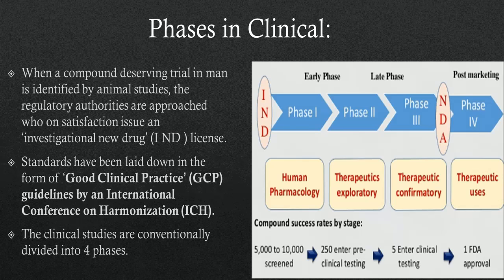Standards for the design, ethics, conduct, monitoring, auditing, recording, and analyzing data and reporting of clinical trials have been laid down in the form of Good Clinical Practice, GCP, guidelines by an International Conference on Harmonization, ICH. Adherence to these provides assurance that the data and reported results are credible and accurate, and that the rights, integrity, and confidentiality of trial subjects are protected.